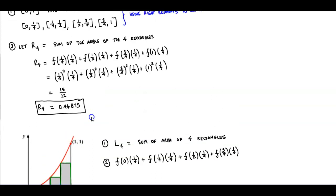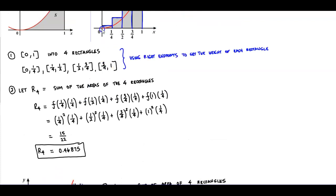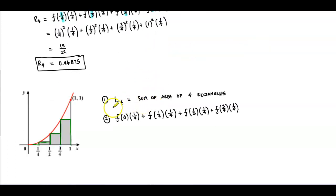Notice the difference between right and left endpoints. For right endpoints we use f(1/4), f(1/2), f(3/4), and f(1) — we don't use 0. When using left endpoints, we start with 0, then 1/4, then 1/2, then 3/4, because we're using the left endpoints of the rectangles.